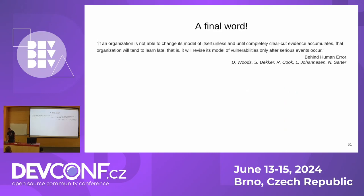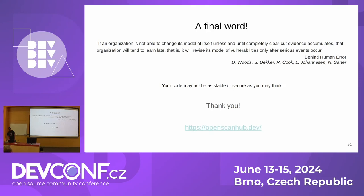This is my last slide. I'll end with a quote from the book 'Behind Human Error,' which talks about the human side of technology failures: 'If an organization is not able to change its model of itself unless and until completely clear evidence accumulates, that organization will tend to learn late — that is, it will revise its model of vulnerabilities only after serious events occur.' Your code may not be as stable or secure as you may think. Thank you for listening.